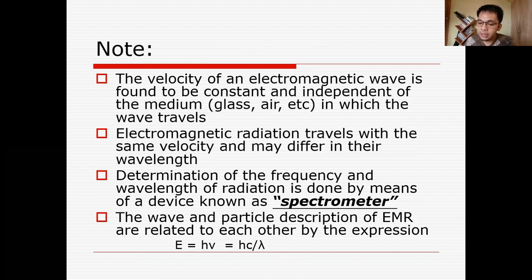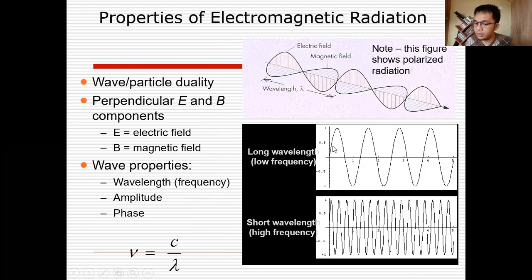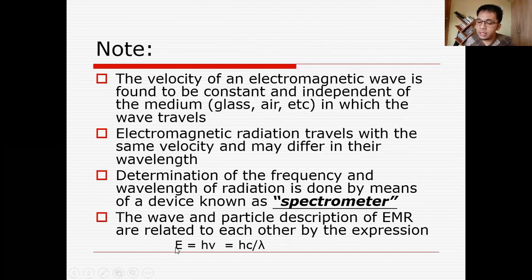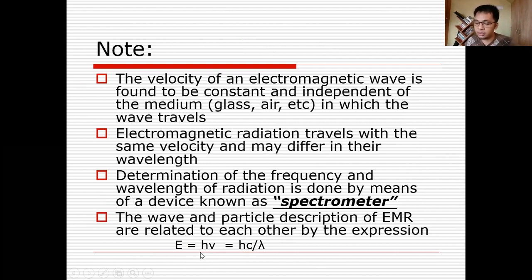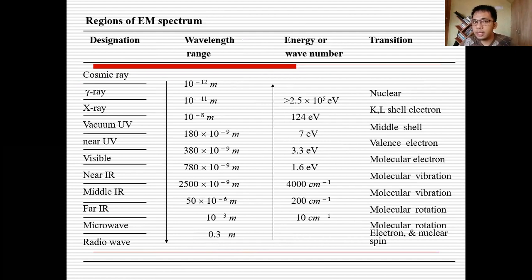The determination of frequency or wavelength of radiation is done by using a spectrometer. If you wish to calculate the energy of electromagnetic radiation, use the formula E = hν, which can be expanded to E = hc/λ, where h is Planck's constant with a value of 6.626 × 10⁻³⁴ joule·second.